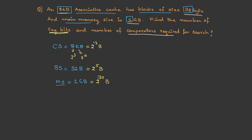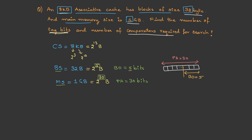The question asks for the number of tag bits. From memory size we get the physical address size, which is 30 bits. From block size we get the block offset bits, which is 5 bits. In the physical address diagram, the least significant 5 bits are the block offset and the remaining bits are the tag bits: 30 − 5 = 25 bits. That is the first answer.